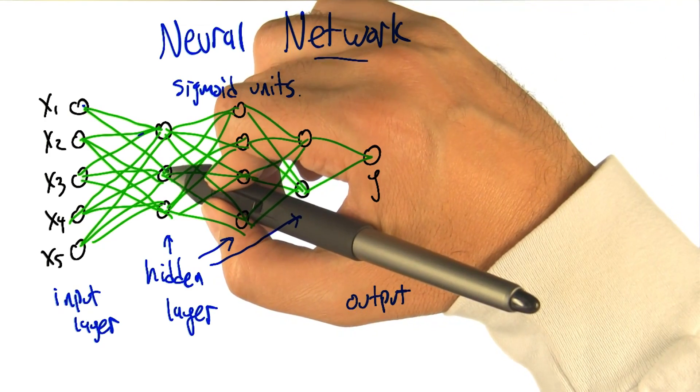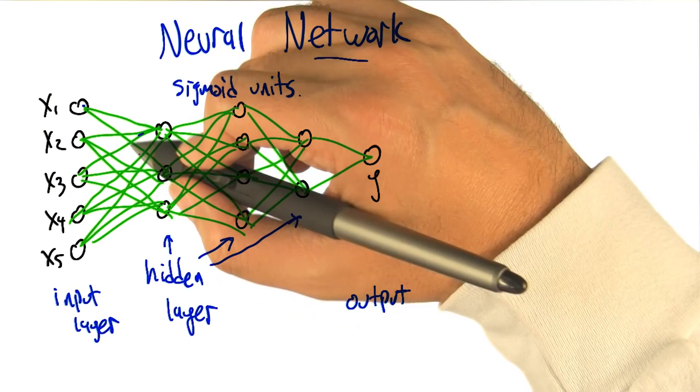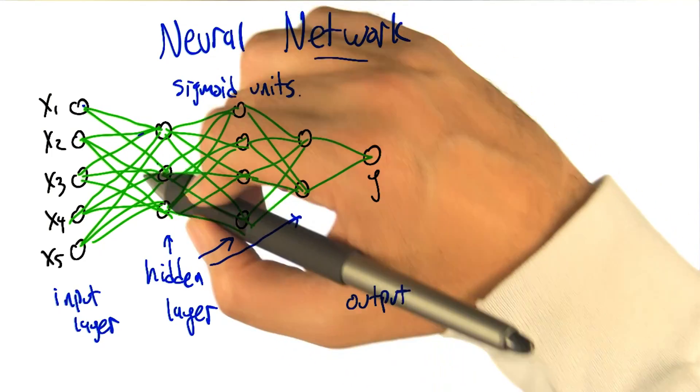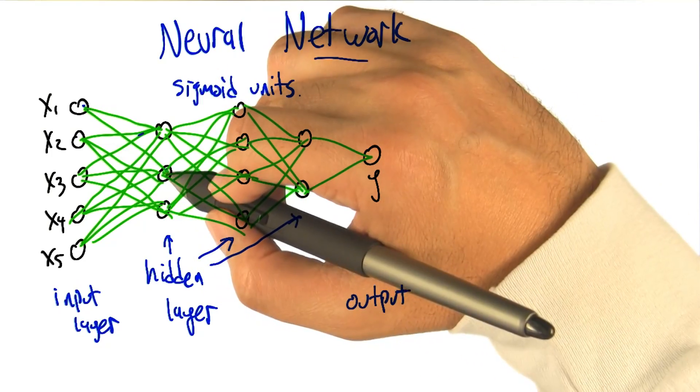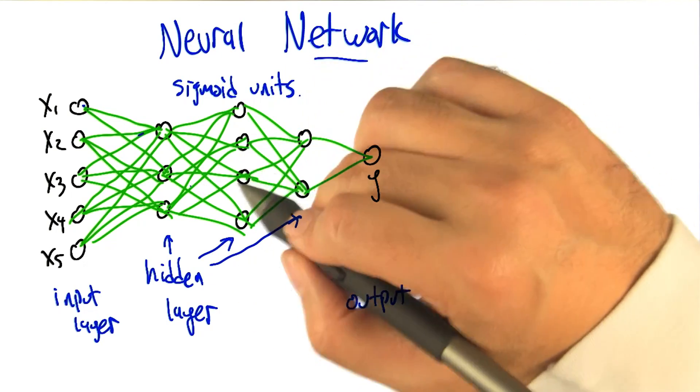And what's happening is that each of these units is running exactly that kind of: take the weights, multiply by the things coming into it, put it through the sigmoid, and that's your activation, that's your output.